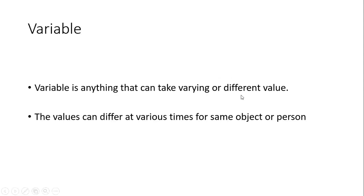Hello dear learners, welcome to the teaching-learning session on research. Today we will talk about the types of variables. What are variables? A variable is anything that takes varying or different values. The values of variables change from time to time, and values can differ at various times for the same object or person, or values can be the same or different for different objects or persons.